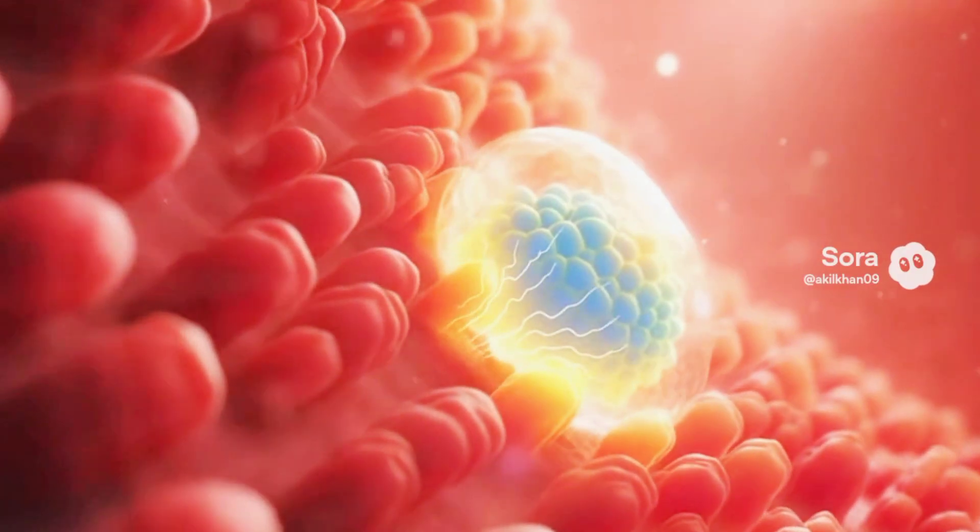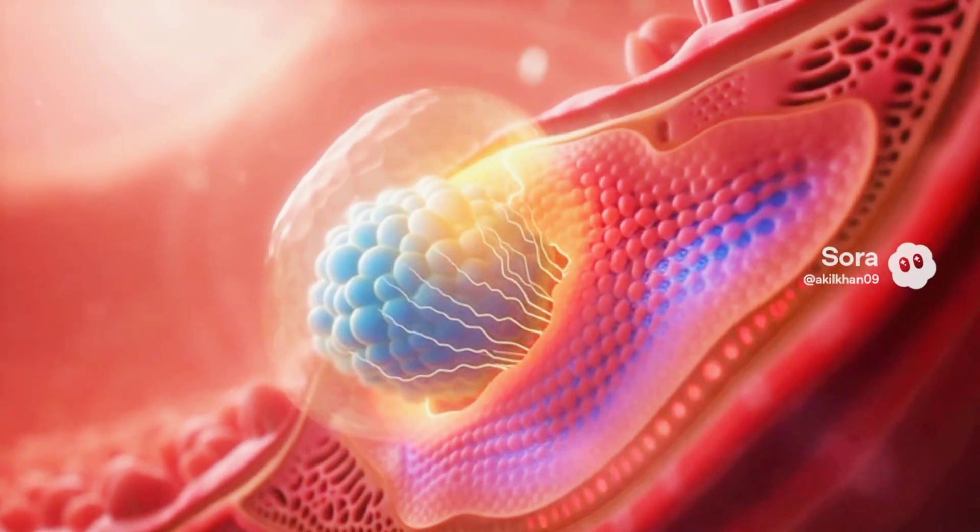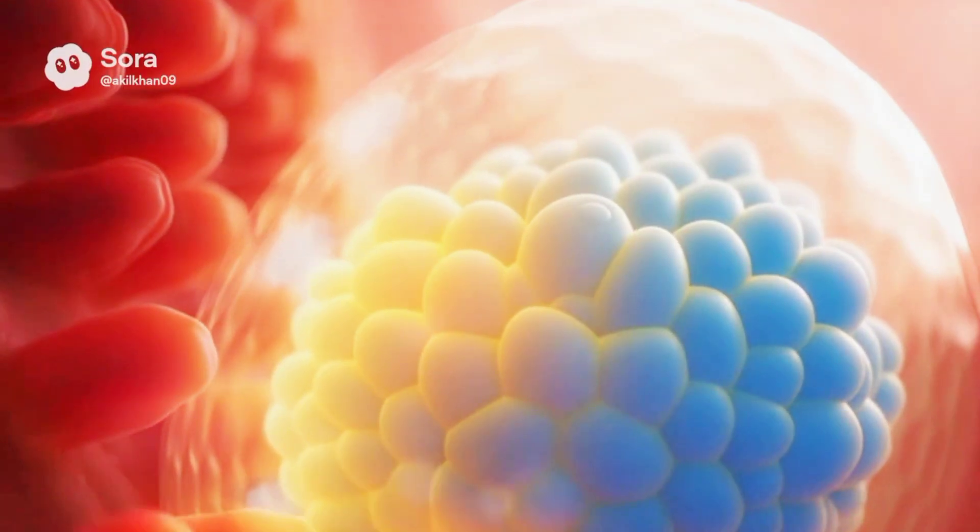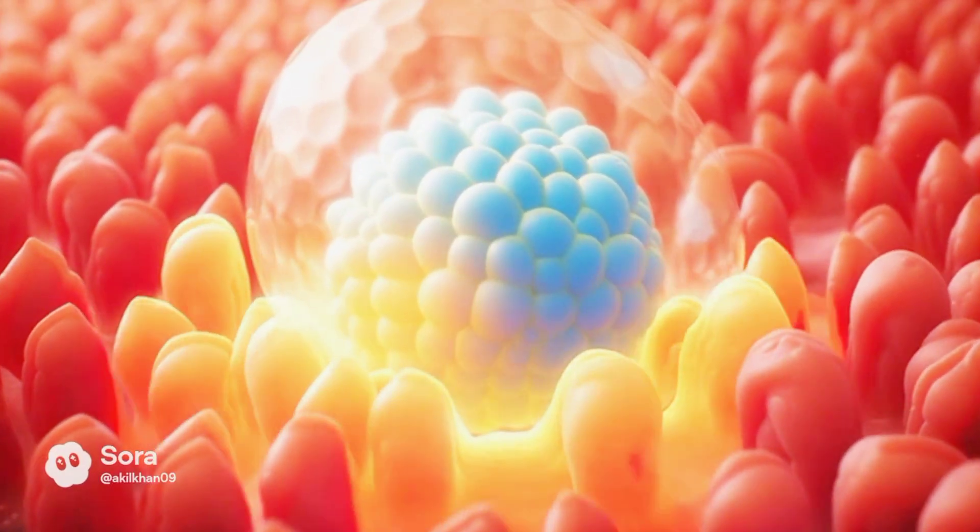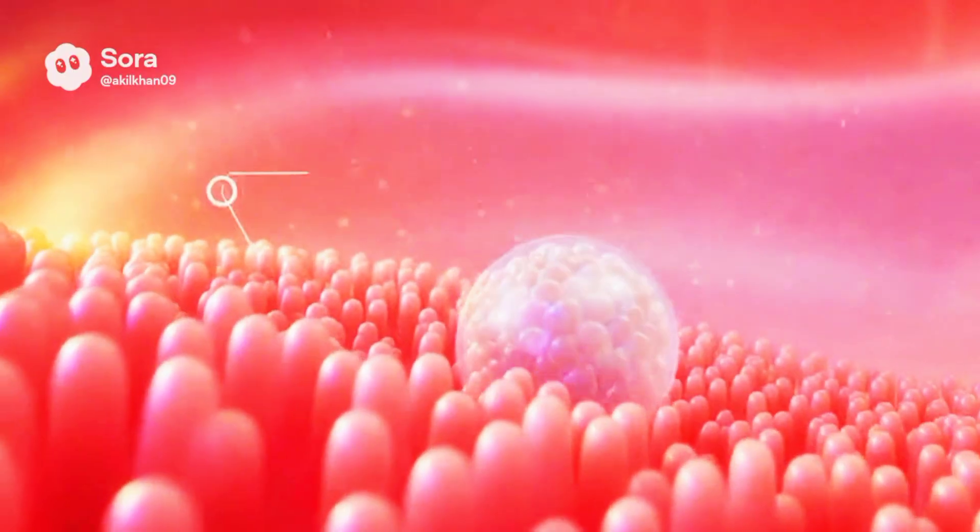This tiny sphere, a blastocyst, drifts through a sea of nourishing fluid and reaches the plush landscape of the uterine lining. Its outer cells unfurl, reaching like curious roots, searching for a home. This is implantation.